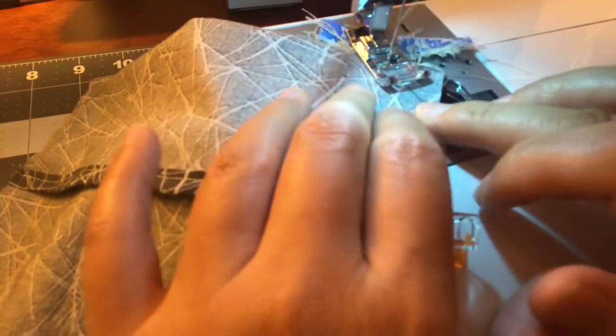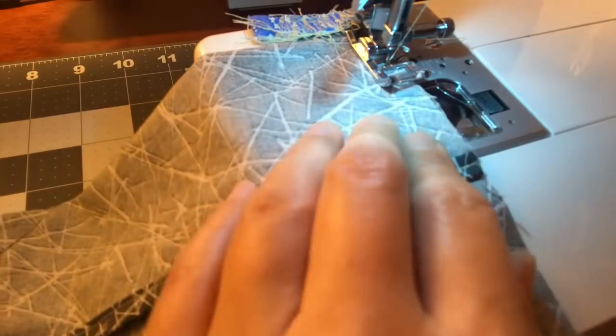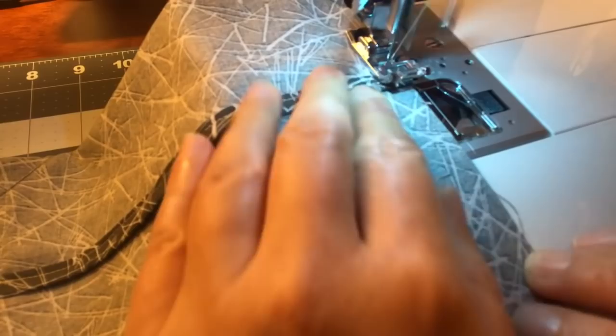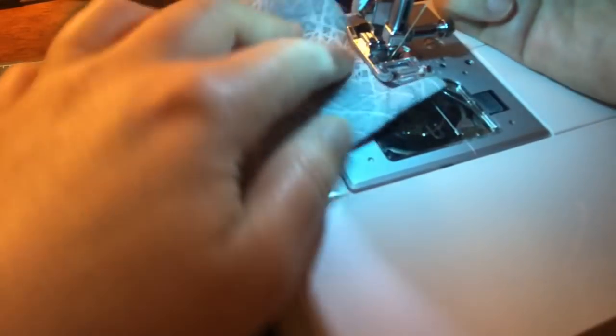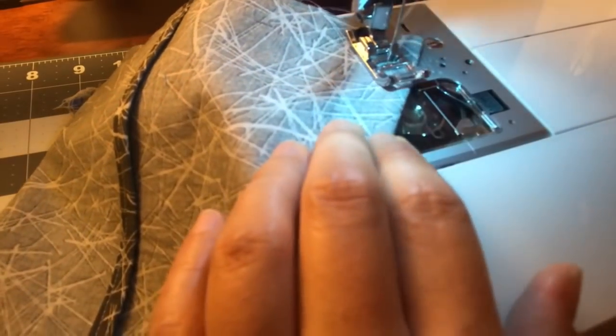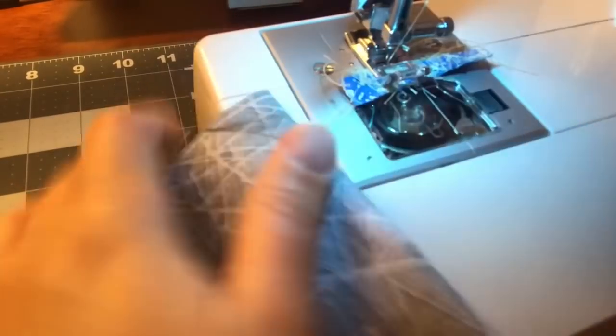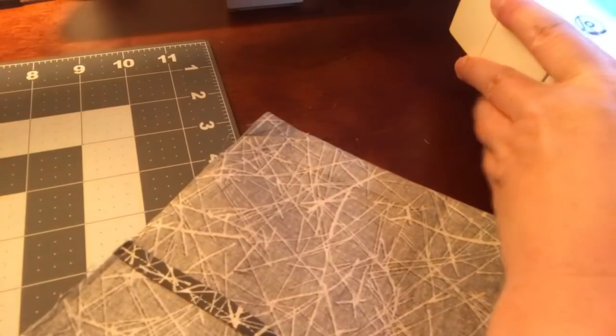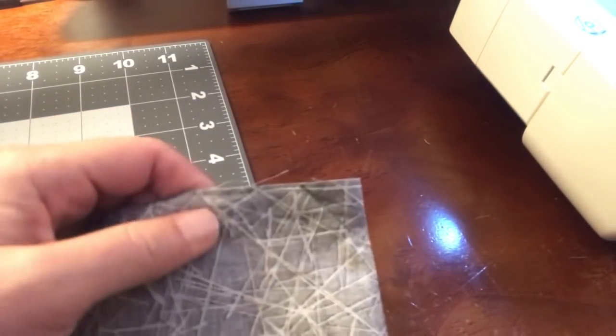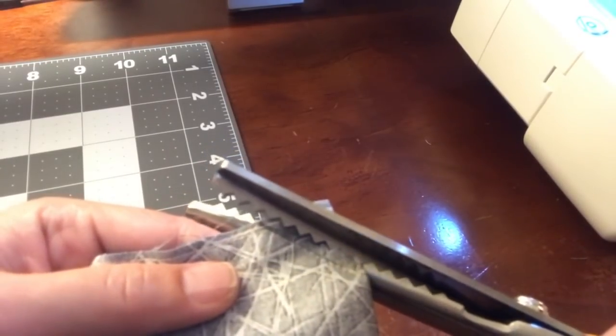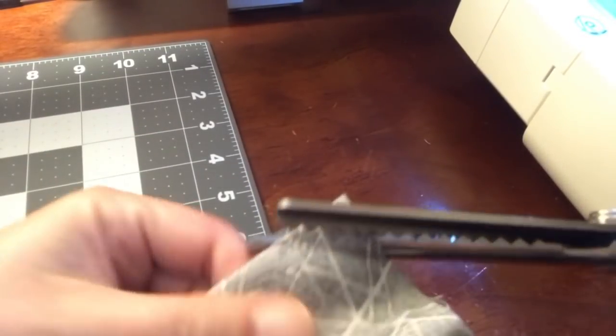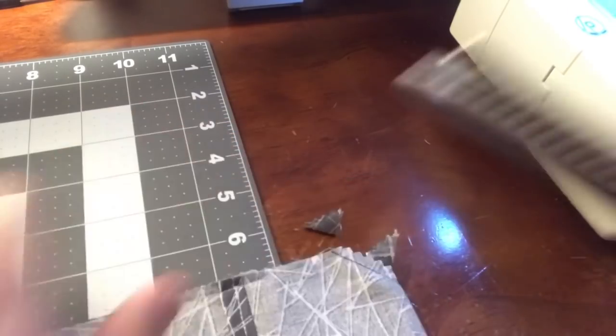Backstitch, stop, turn the fabric, and then continue all the way down until you hit that line again. Turn the fabric and then finish it up. Hopefully you can see this is how it looks like.